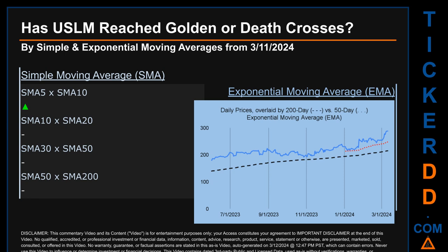For SMA, we looked across the 5-to-10, 10-to-20, and 30-to-50 day ranges to see if golden or death crosses had been reached. We found a golden cross signal for the 5-to-10 range. We could not find either a golden cross or death cross signal for the 10-to-20, 30-to-50, or 50-to-200 day ranges.